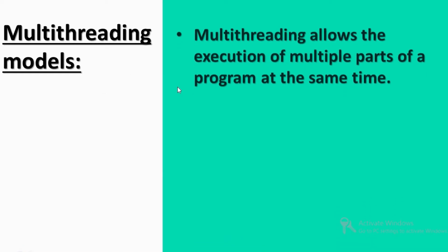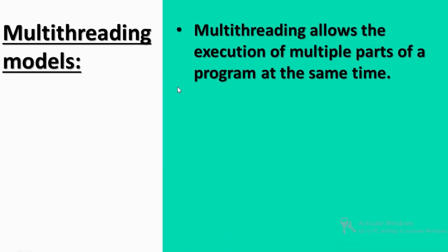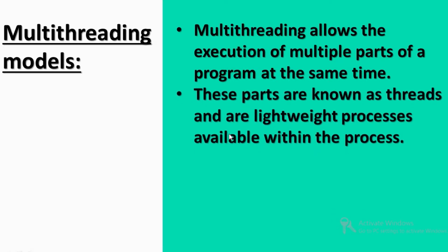Multi-threading allows the execution of multiple parts of the program at the same time. For example, if there is a program, there are different kinds of statements and different tasks. These parts are known as threads — a lightweight process available within the process.